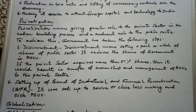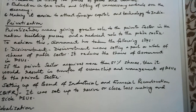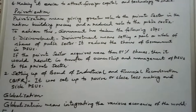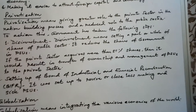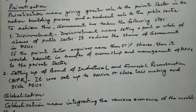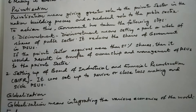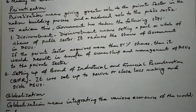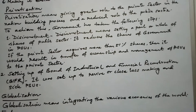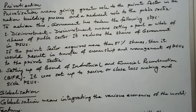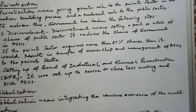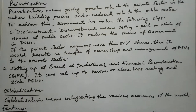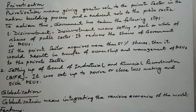Disinvestment can involve selling a part or the whole of the shares of a public sector undertaking. This reduces the government's share in public sector undertakings. If the private sector acquires more than 51% of shares, it results in the transfer of ownership and management of the public sector undertaking to the private sector. All decisions regarding production and distribution will then be taken by the private sector.